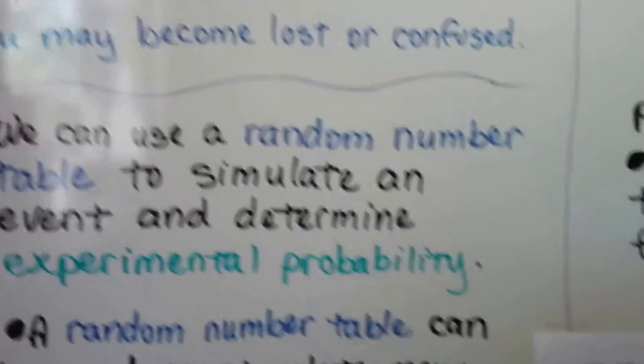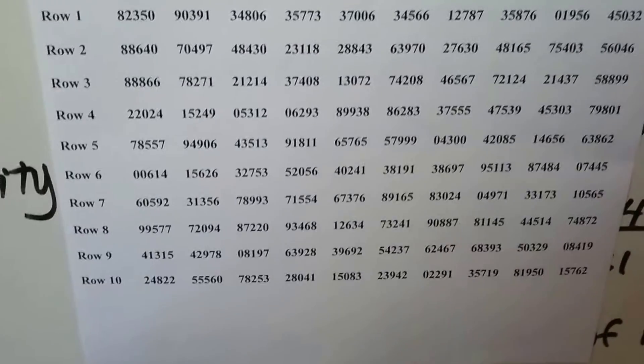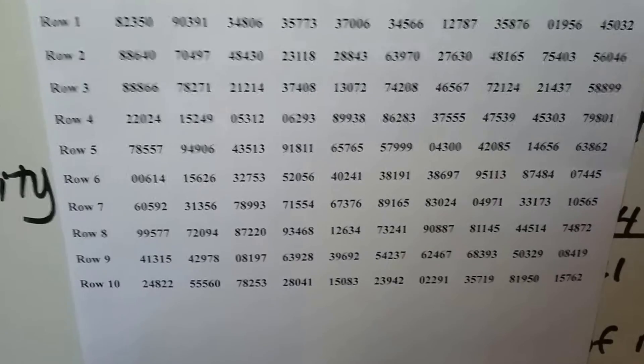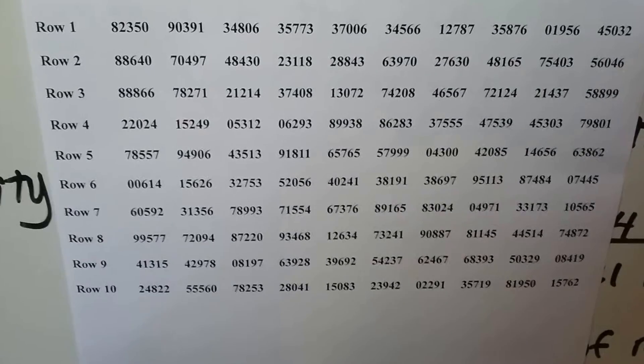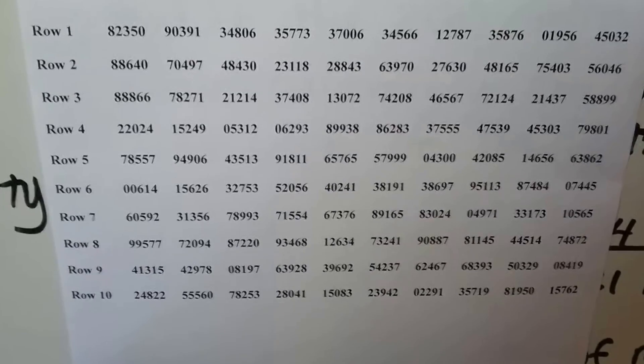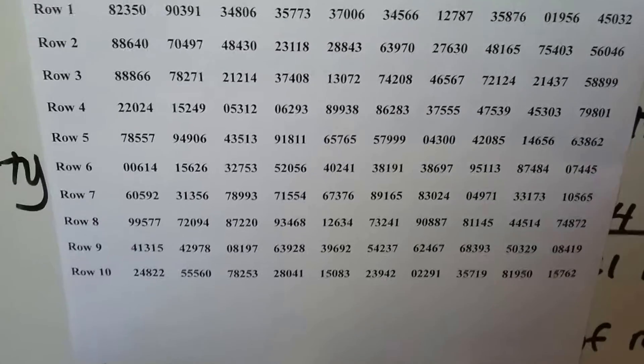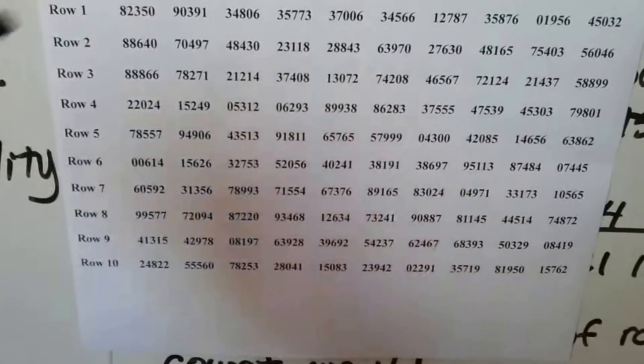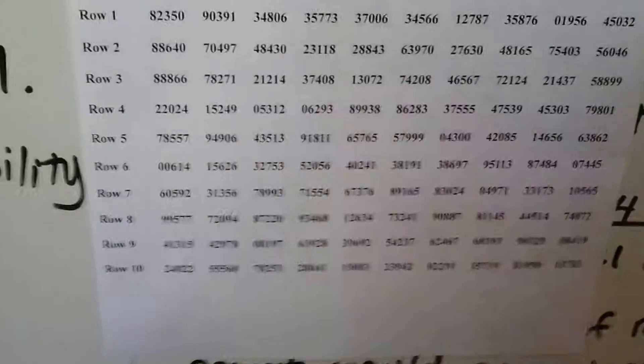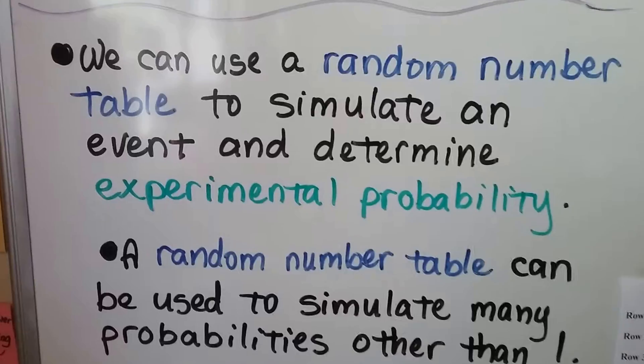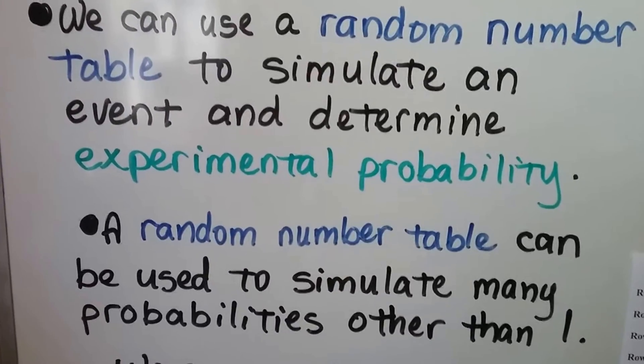So a random number table, here's a random number table. It's just a table with a bunch of random numbers. You can see how this one's organized. The digits are in groups of 5 and we've got rows. That's a random number table and we can use one of these to simulate an event and determine experimental probability.